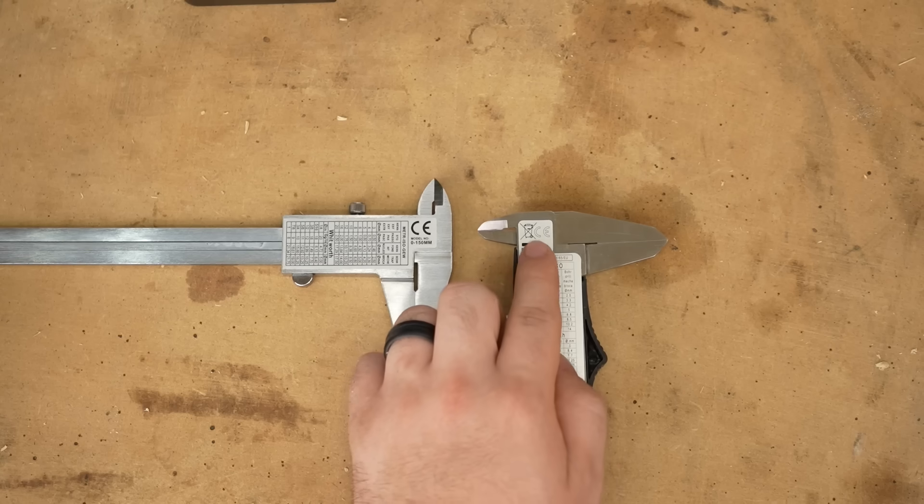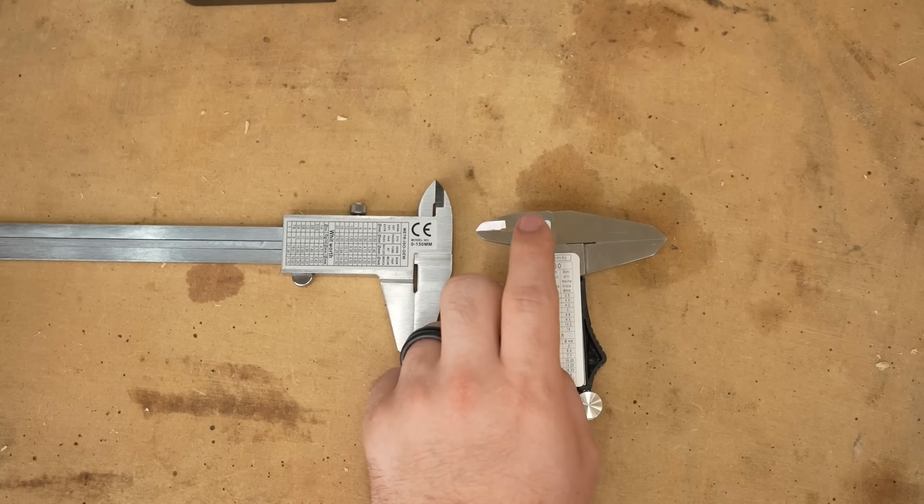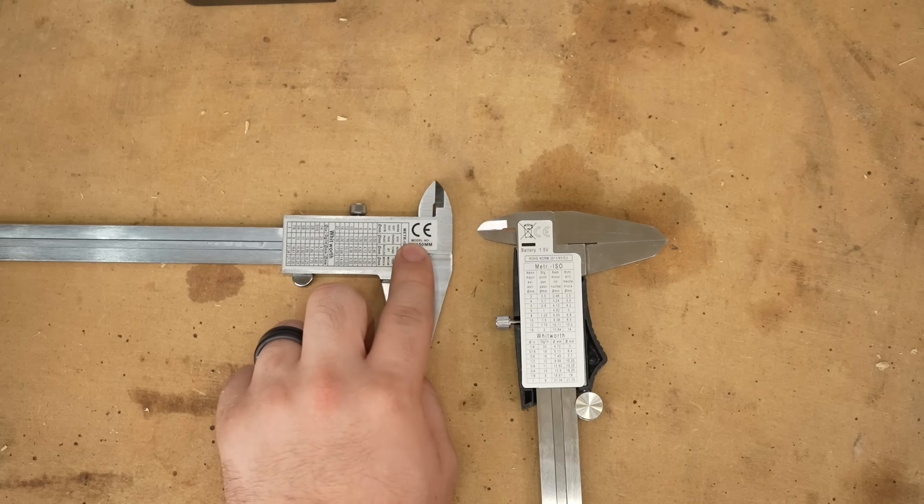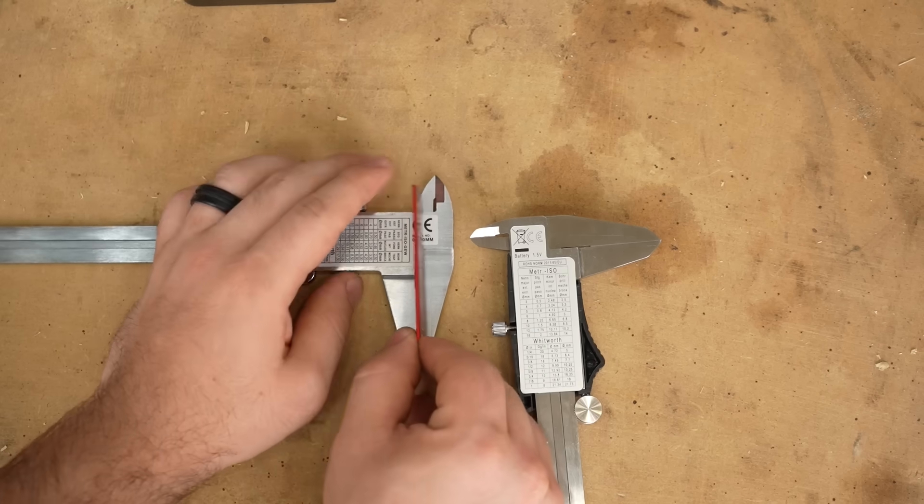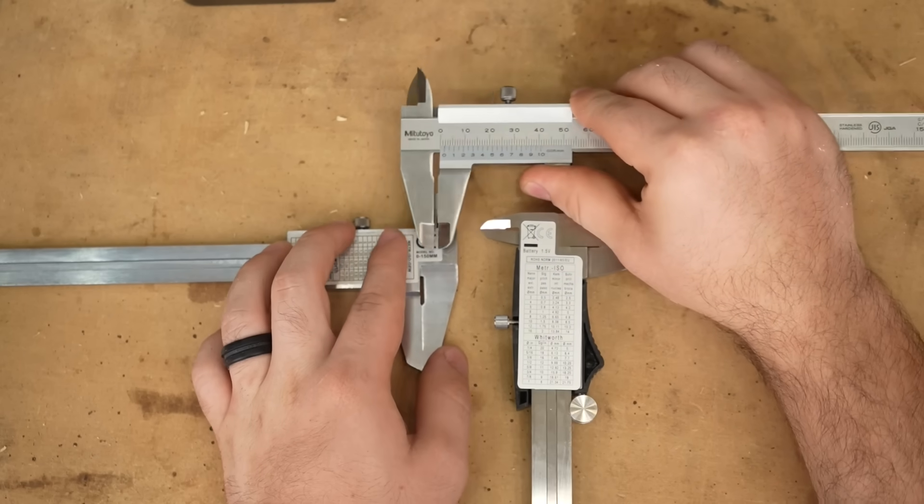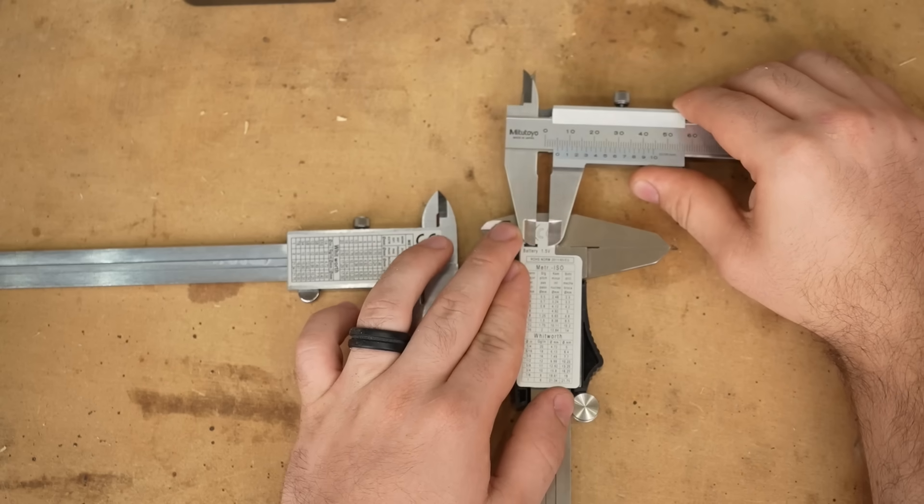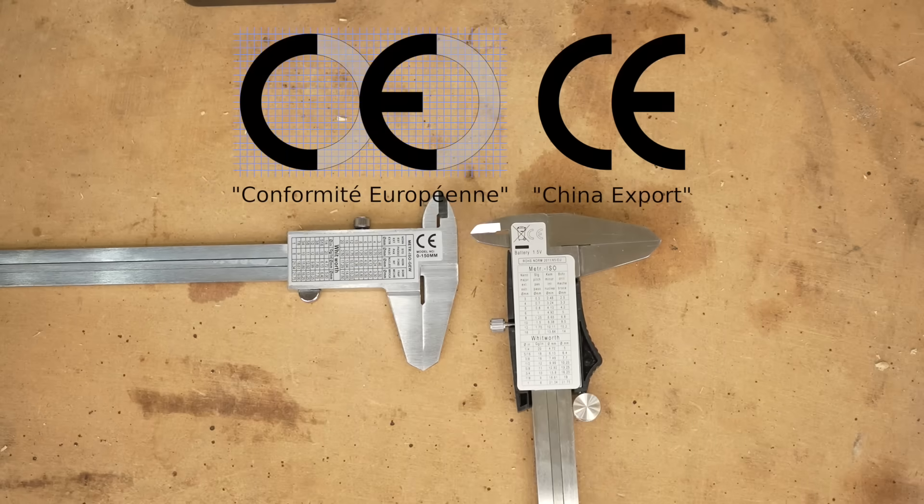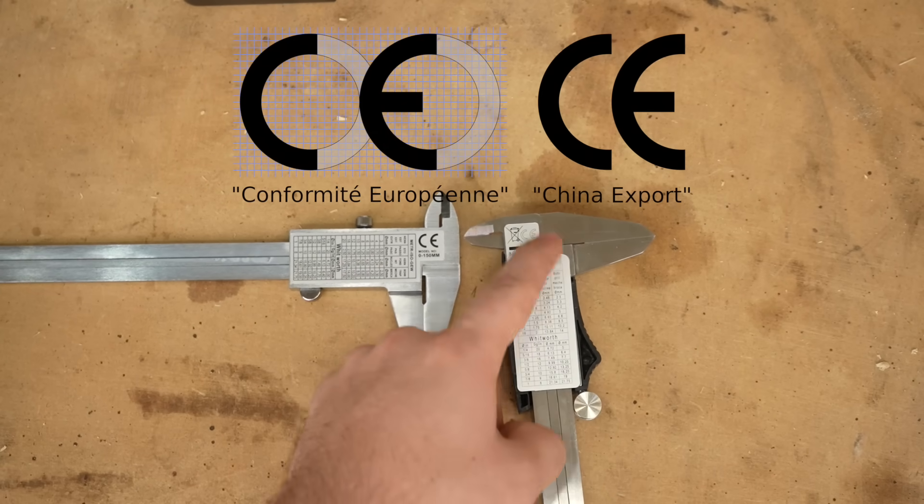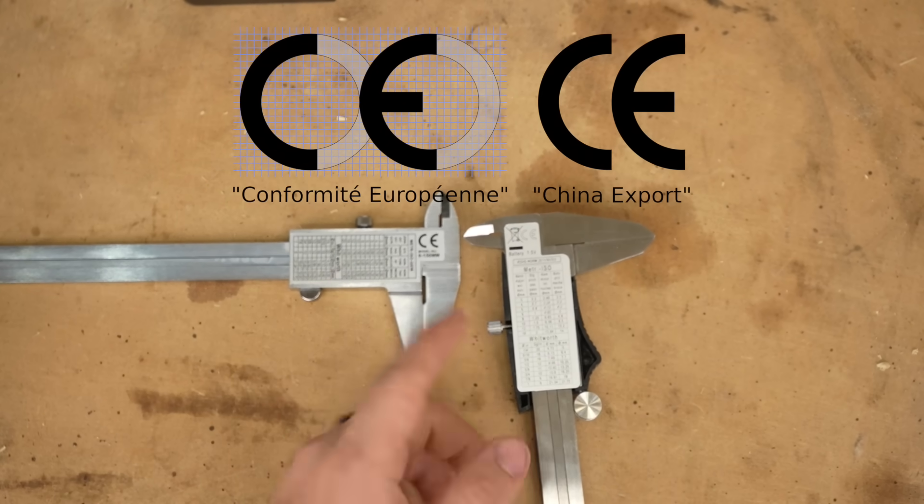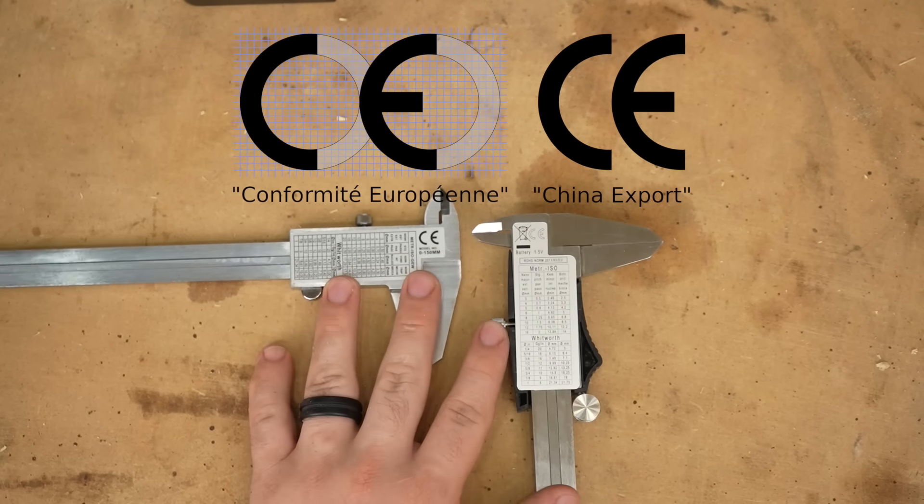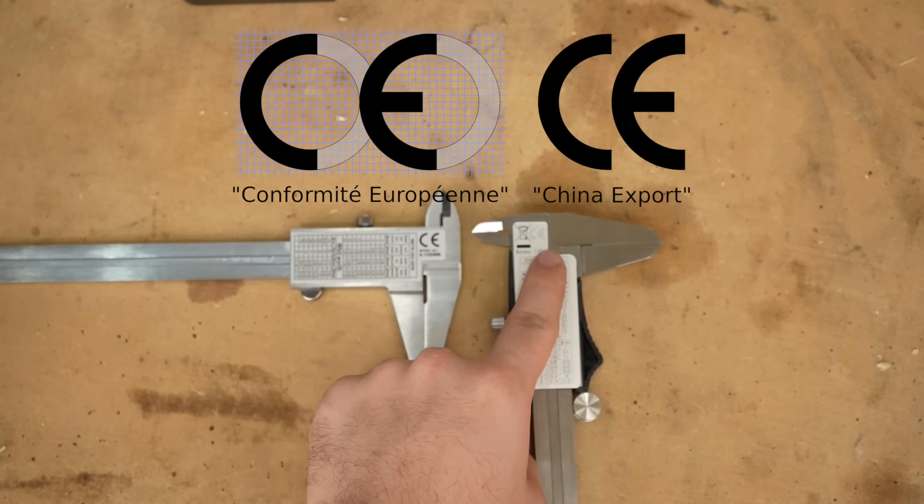To distinguish between the emblems, you need to look at the spacing between them. The European conformity emblem has more space in between the letters, while the China export emblem is closer together. If you imagine the C completing a circle, it should barely intersect with the letter E. If it looks like it would surpass it, then it's a China export emblem.